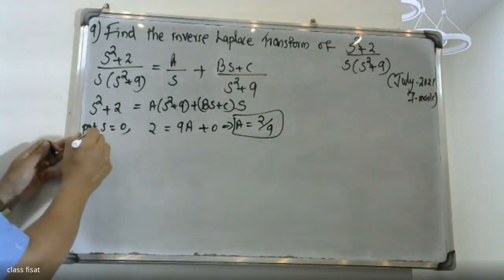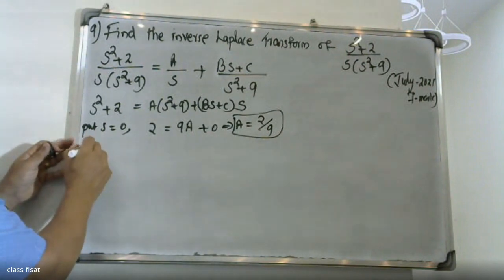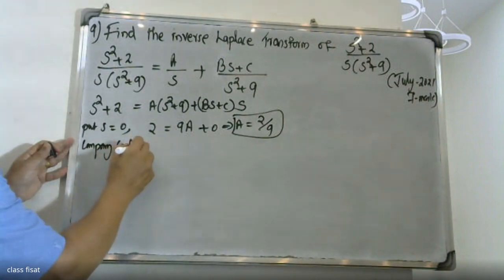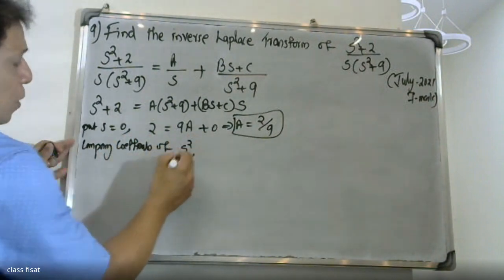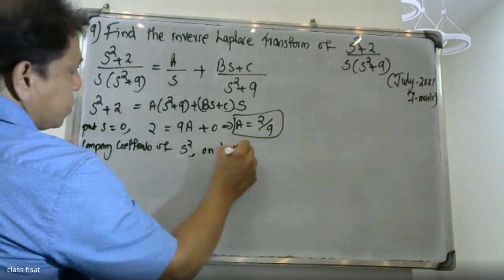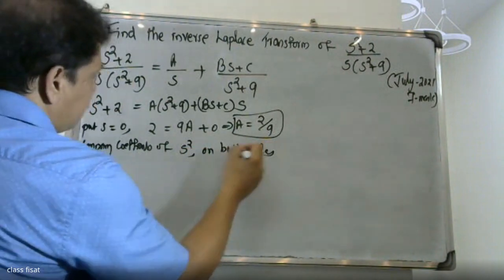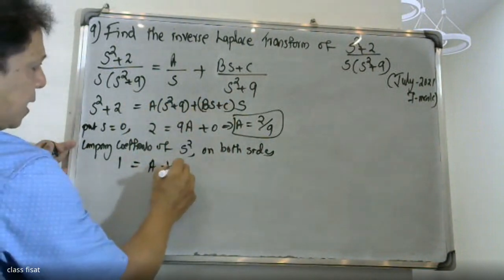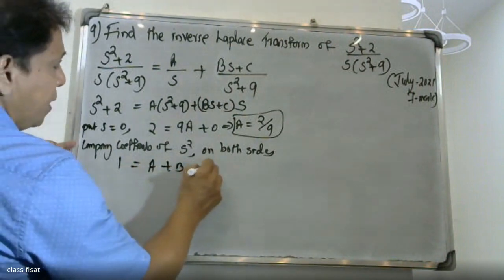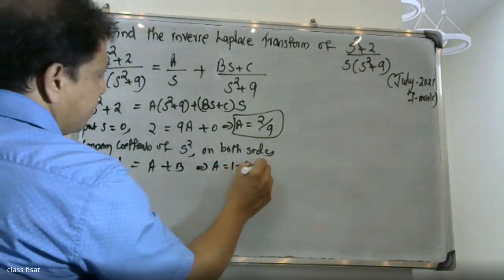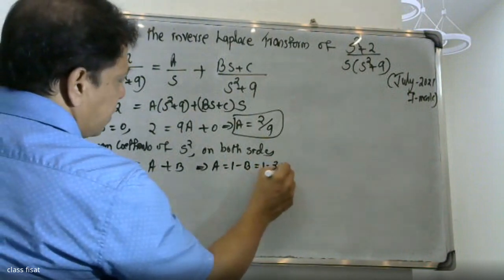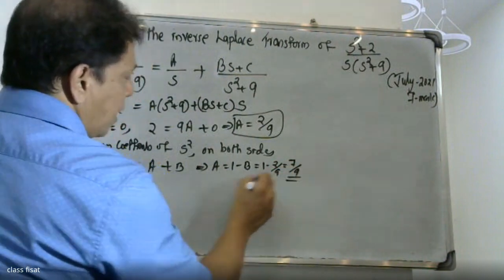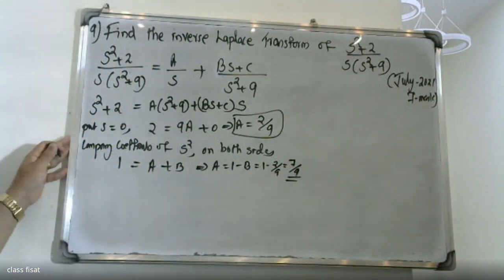Now comparing coefficients of S² on both sides. On the left-hand side the S² coefficient is 1. On the right-hand side we get A plus B equal to 1. Therefore B equals 1 minus A, which is 1 minus 2/9, giving 9 minus 2 equals 7. So B is equal to 7 by 9.